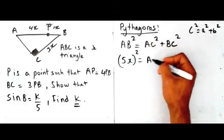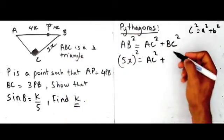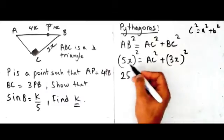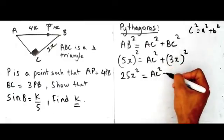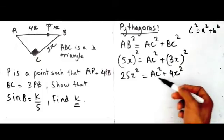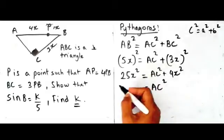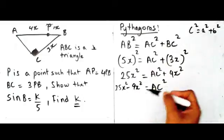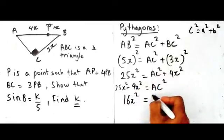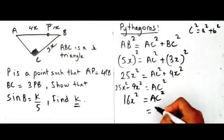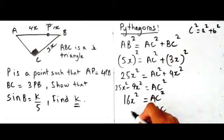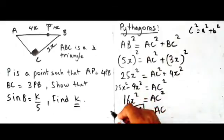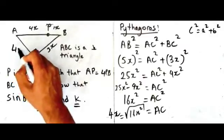AC we don't really know, and BC is equal to 3x so that's 3x squared. Squaring the numbers: 5 squared is 25, so 25x squared equals AC squared plus 9x squared. Making AC the subject: AC squared equals 25x squared minus 9x squared, which gives 16x squared. Taking the square root of 16x squared gives just 4x. So AC is equal to 4x.